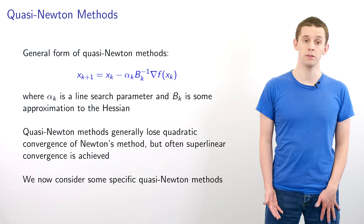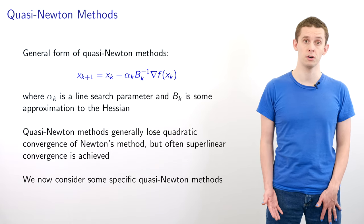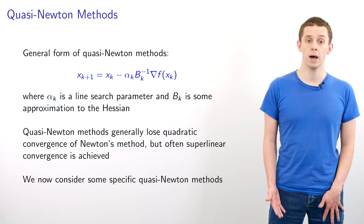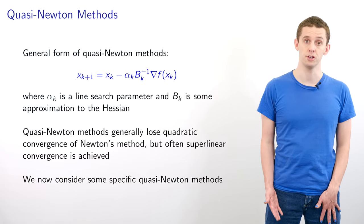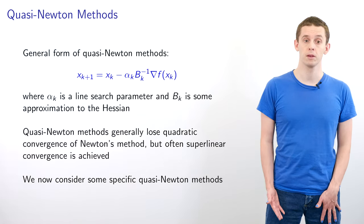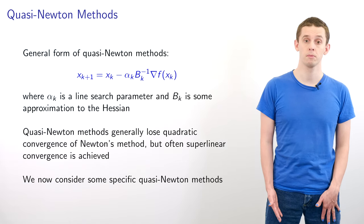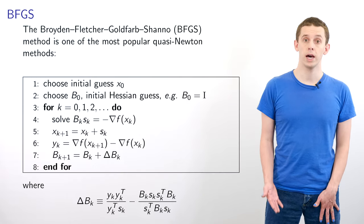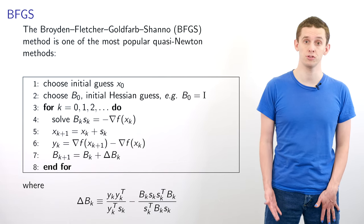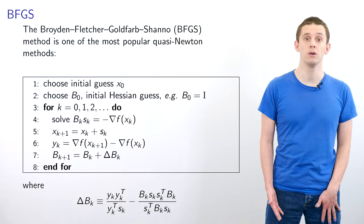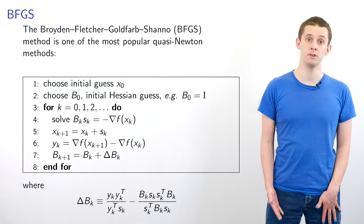Quasi-Newton methods generally lose the quadratic convergence of Newton's method. However, superlinear convergence is often achieved. We'll now look at a few specific quasi-Newton methods. A very popular choice is the Broyden-Fletcher-Goldfarb-Shanno method, or BFGS method, that is defined as follows.